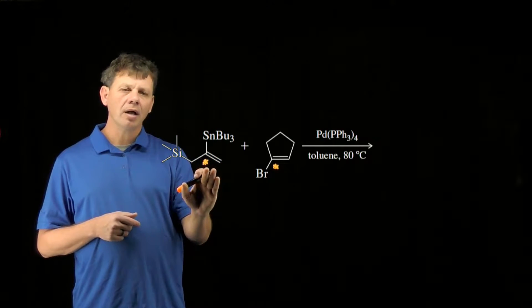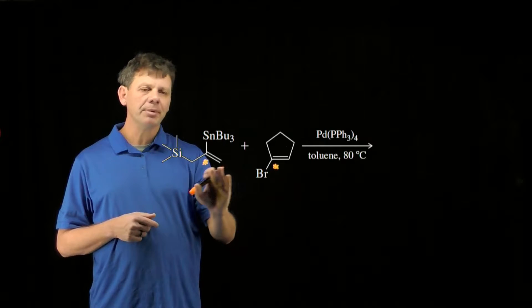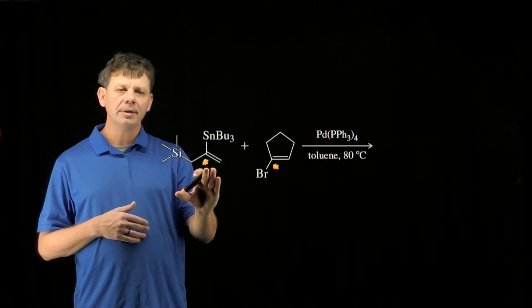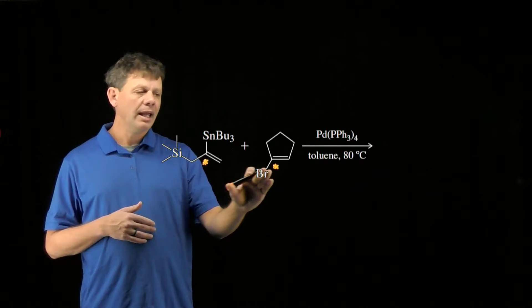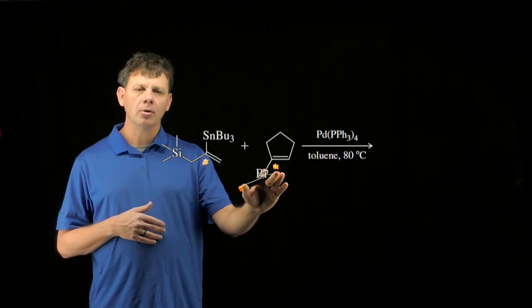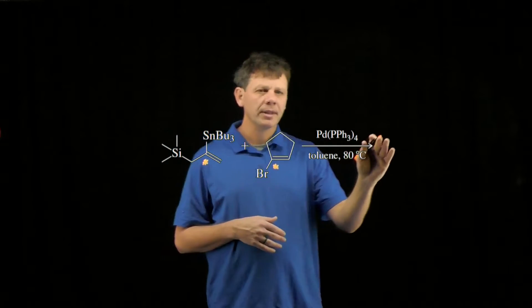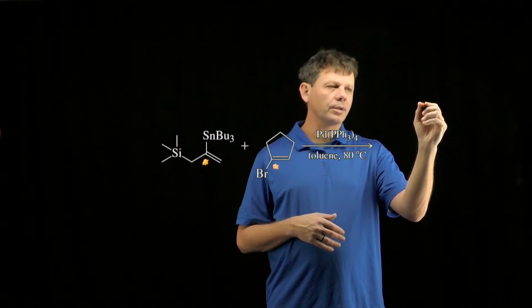Now I've put a star on the two carbons because what's going to happen here is we're going to form a new carbon-carbon bond between the carbon bearing the organotin and the carbon bearing the bromide. And so we can just stitch these two things together to give us the following product.